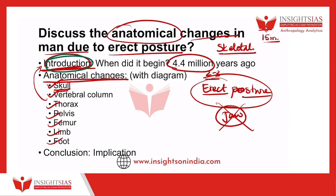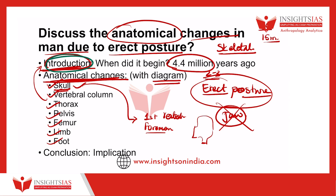Coming to the body of the answer: for anatomical changes in the skull, you will write that the skull is balanced on the first vertebra — that is the atlas. Then, very importantly, the foramen magnum is centrally placed. Unlike other primates or animals where it is posteriorly placed, in man it is placed at the base of the skull — centrally placed. You can draw a diagram to illustrate this.